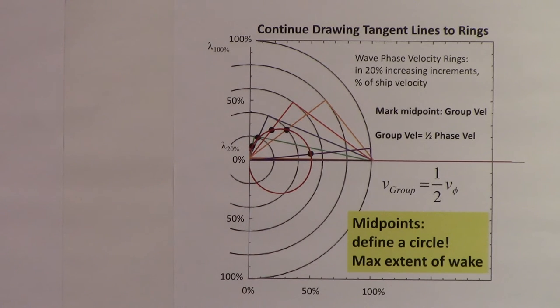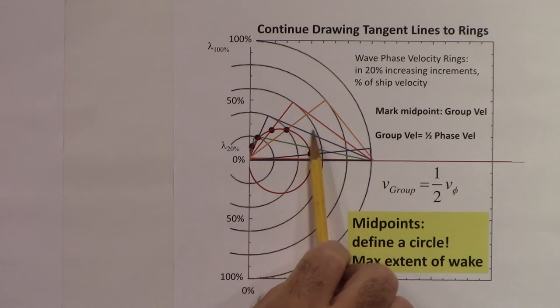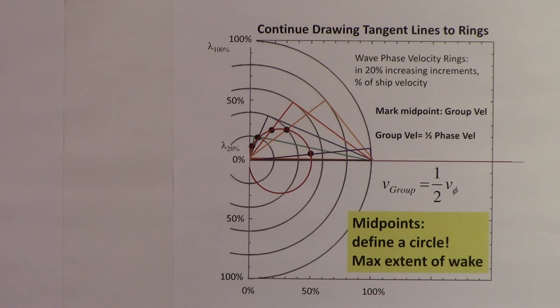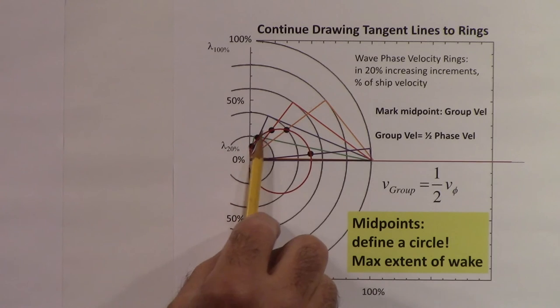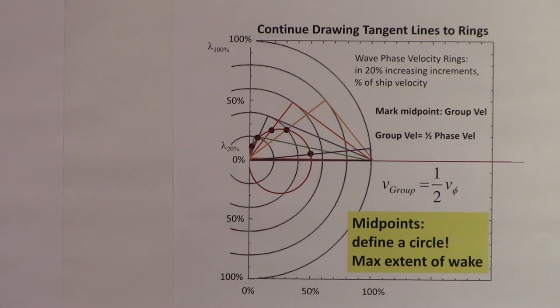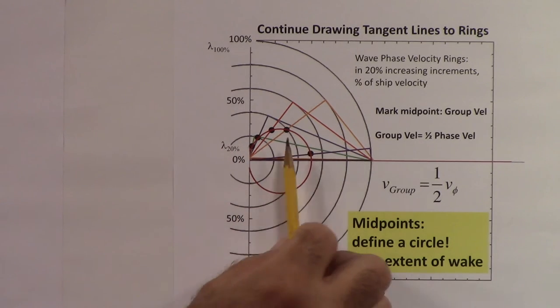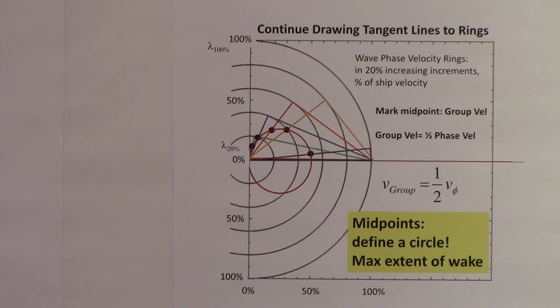Those midpoints define a circle. You can work out the geometry exactly and convince yourself that those midpoints all fall on a circle. But I'm just trying to use this diagrammatic approach here to show you that they do fall on a circle. We could fill more in, but we're just going to stick with that.